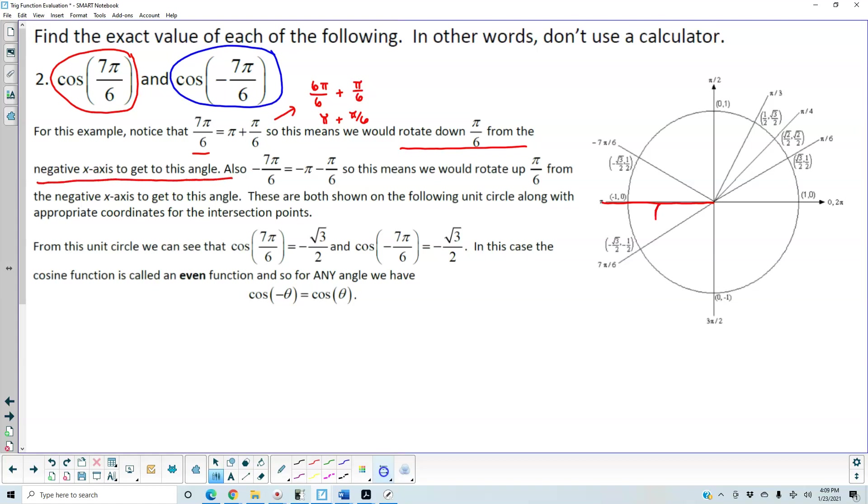So when we move down π over 6, that means we get this angle, which is 7π over 6.